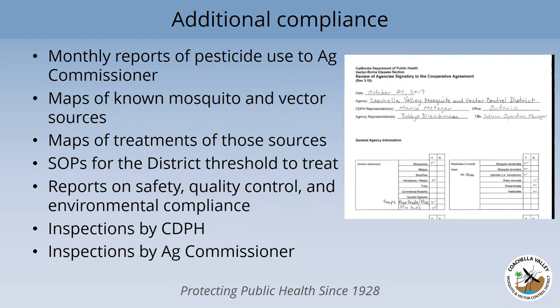Those are not the only things that we do for compliance. There's lots of report writing done by a lot of people here at the district. This includes the monthly reports of pesticide use to the Agricultural Commissioner, and technicians are often inputting into the mobile system — those have to get corrected so that we get an accurate tally every month of what we used. We have to include in our annual CEQA report maps of where we know that mosquitoes and other vectors may be — maps of all the mosquito sources we know about in the valley, all the places that have the potential for red imported fire ants, and maps of the treatments of those sources.